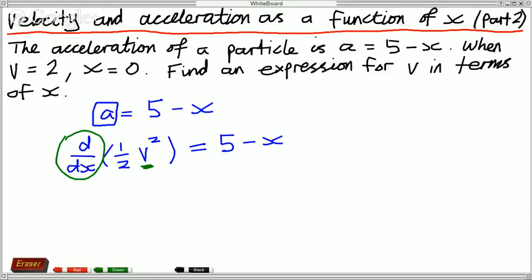So if I integrate both sides with respect to x I get a half v squared is going to be equal to 5x minus x squared on 2 plus c. So we double both sides here, we get v squared equals 10x minus x squared and we'll just leave it as plus c because it's still some arbitrary constant we haven't found out.